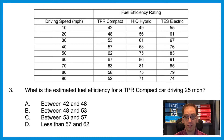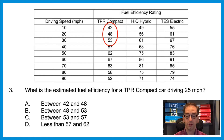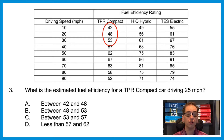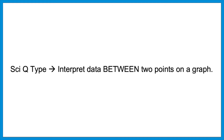Question three: What is the estimated fuel efficiency for a TPR compact car driving 25 miles per hour? At 10 mph the car has a rating of 42, at 20 mph the rating is 48, and at 30 mph the rating is 53. The numbers trend upwards. If the question asks for 25 mph, you are allowed to assume the rating falls right between 20 and 30 mph. So the answer is B, between 48 and 53. You can interpret data between two points on a graph. Notice how we answered all three questions without even looking at an actual passage.